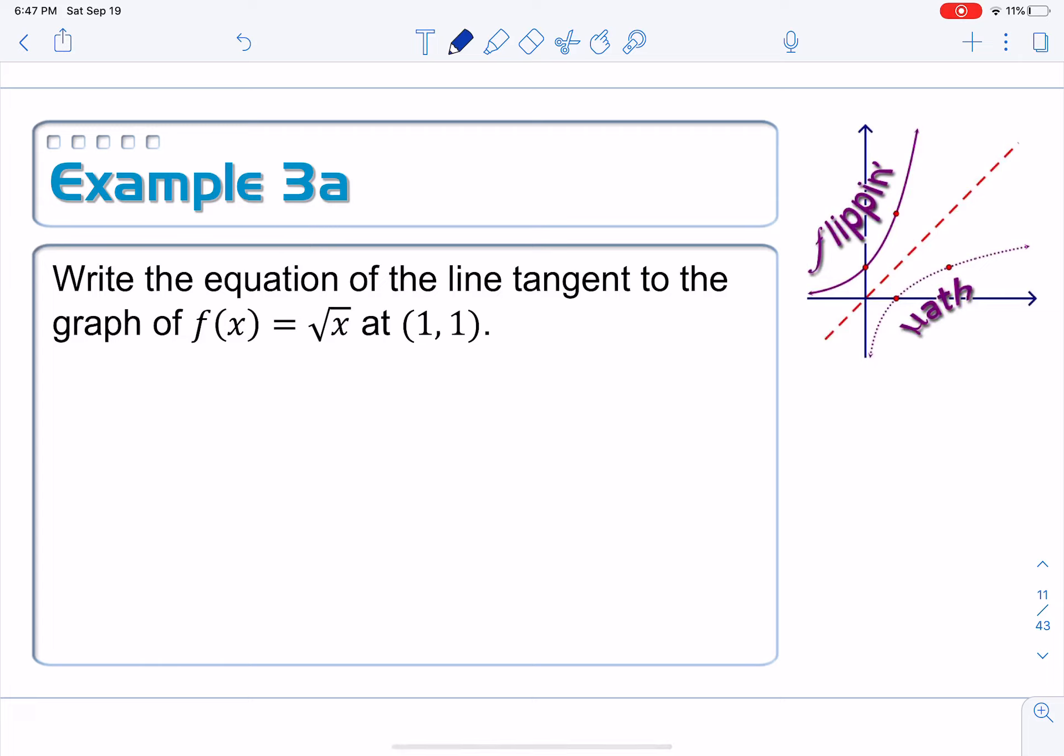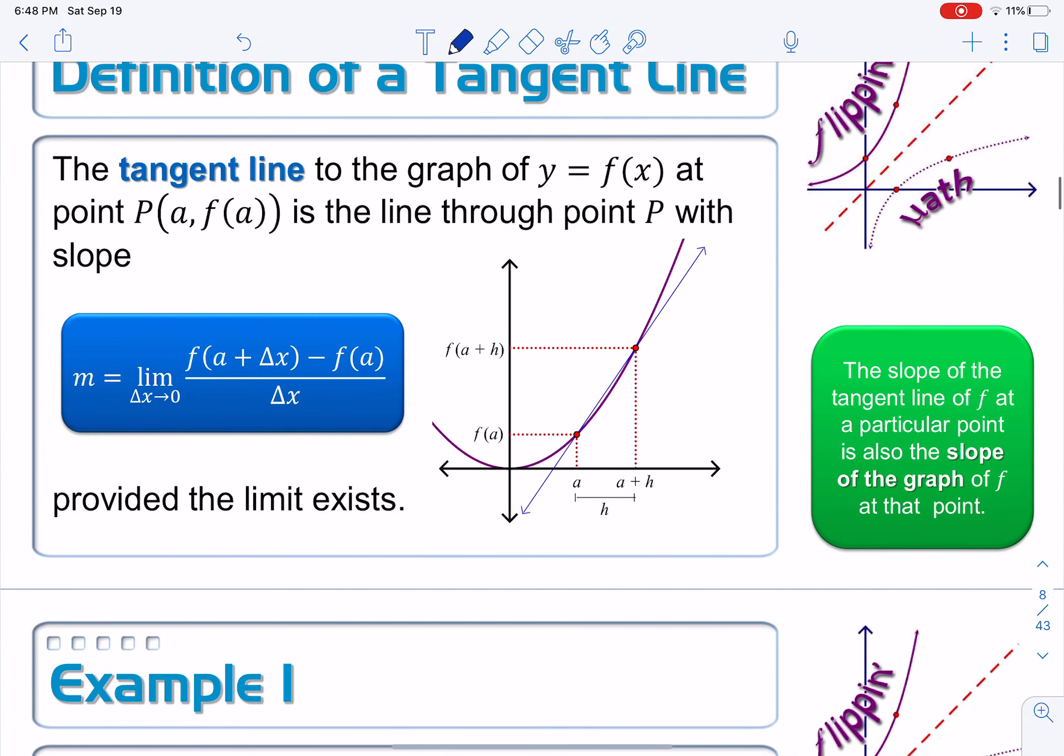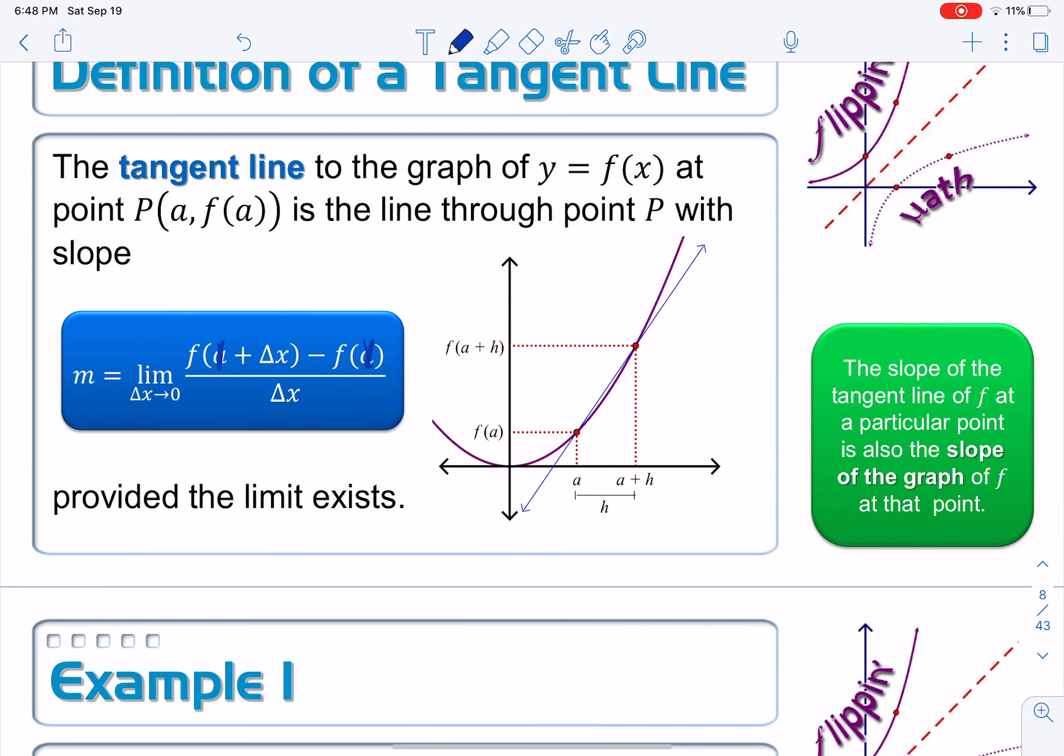So let's see. I want the slope using the tangent line definition, which is the limit as h goes to 0 of f of 1 plus h minus f of 1 all over h. Remember, we're just applying this thing. Where our 1 is right here. Our 1 is right there.